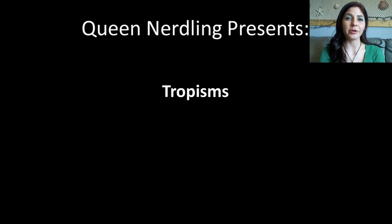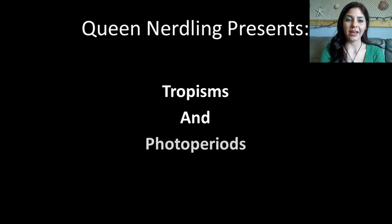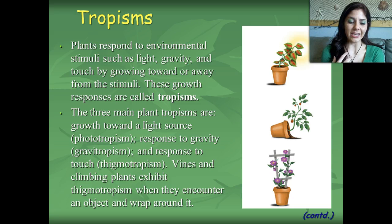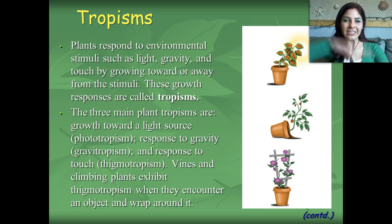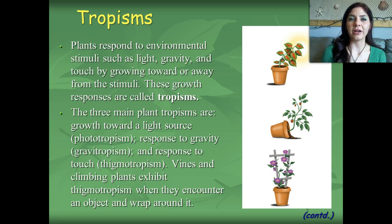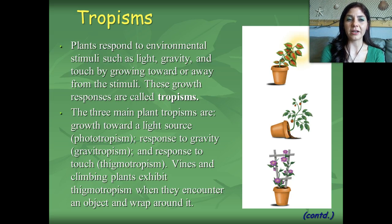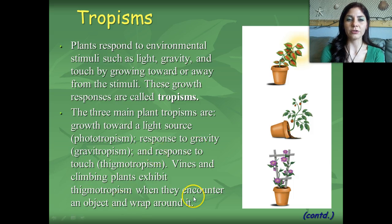Greetings, nerdlings. Today we're going to be talking about tropisms and photoperiods. Tropisms are basically the way that plants respond to their environment. Just like we as humans respond to things like heat — if I touch something that's hot, I'm going to pull my hand away — plants respond to environmental stimuli such as light, gravity, and touch by growing either towards or away from that stimulus. Those responses are called tropisms.